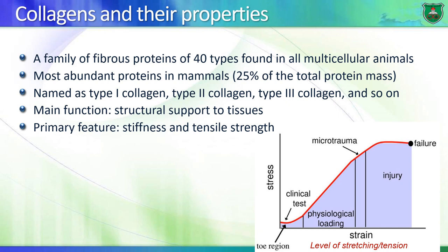Collagens belong to a family of proteins — there are 40 different types in our system. In fact, collagens are the most abundant proteins, constituting 25% of the total protein mass. They are usually named type 1 collagen, type 2 collagen, type 3 collagen, and so on. Their main function is to support tissues, and because their function is structural — like in bones — their primary feature is stiffness. They are rigid, tough molecules, and because of their stiffness, they provide tensile strength to tissue.